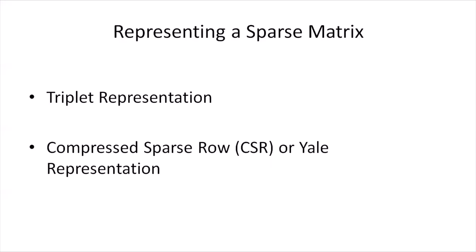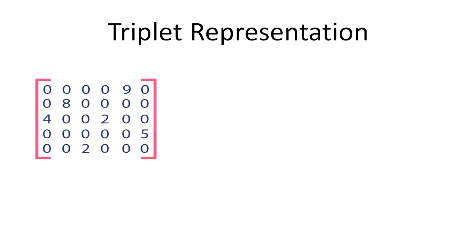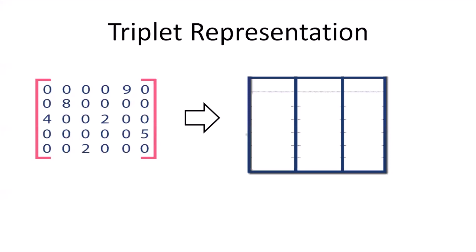Let us take a plunge into the concepts of the triplet representation. Let us consider a five-cross-six matrix as shown in the slide. The triplet representation corresponding to this matrix is going to have three columns. In the triplet representation, the zeroth row is somewhat different than the rest of the rows. The zeroth row is responsible for holding the dimension of the matrix, or the order of the matrix, and the number of non-zero elements in the matrix.